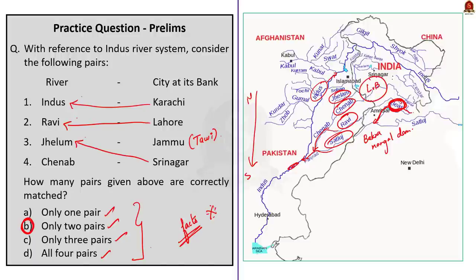Lesser-known left bank tributaries of Indus include the Zanskar river and Sohan river. The major right bank tributaries of Indus include Shyok river, Gilgit river, Swat river, Kunnar river, Kuram river, Gomal river, and Kabul river.